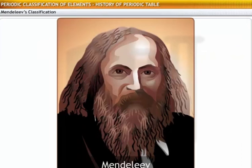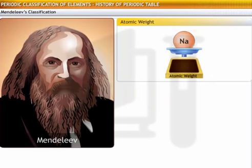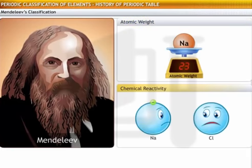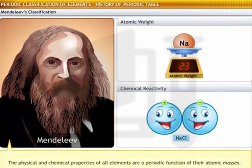Mendeleev based his work on the research by Newlands and took it further. He felt that effective grouping of elements and prediction of properties could be based on two parameters, atomic weight and chemical reactivity. Mendeleev's periodic law states that the physical and chemical properties of all elements are a periodic function of their atomic masses.